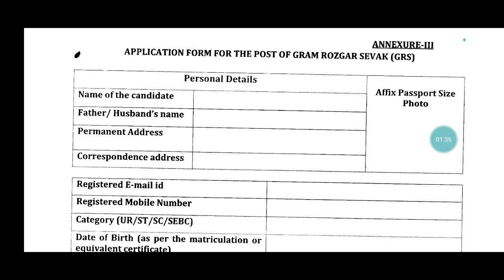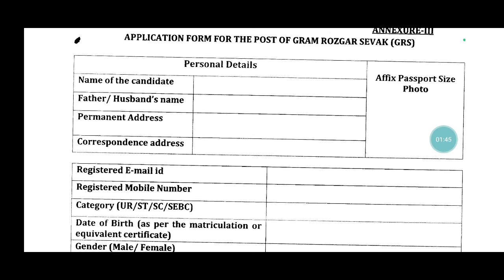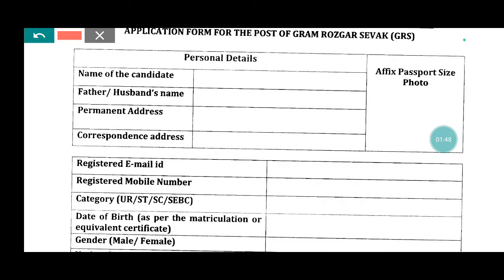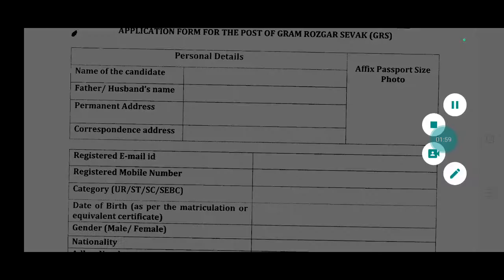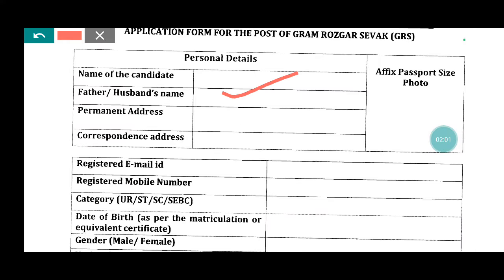Our first question: how much details are available? We can see the application form for the post of Gram Sewak JRS. Personal details are the first name of the candidate who applied — the 10th certificate where the name was filled up, this is the passport size photograph. This is the 10th certificate, father's name, permanent address details, post, district.